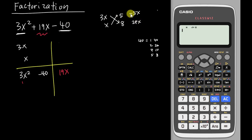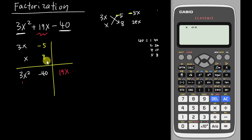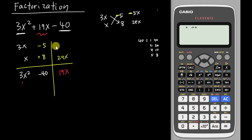So I need to add a negative to the 5. To get negative 40 in the multiplication zone, I put negative 5 and positive 8. That way, 3x times 8 gives 24x, and x times negative 5 gives negative 5x. Adding them: negative 5x plus 24x gives 19x.